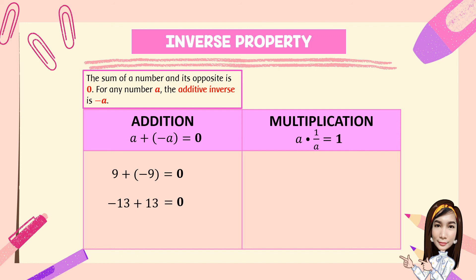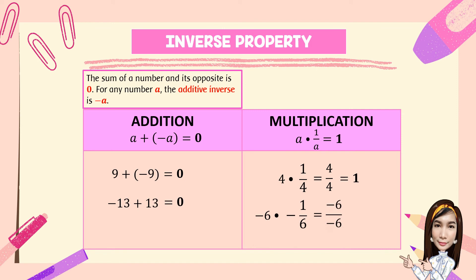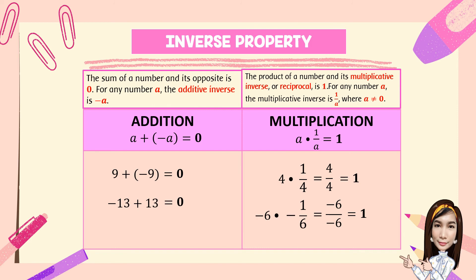For multiplication: A times 1 over A is equal to 1. For example, 4 times 1 over 4 is equal to 4 over 4, and 4 divided by 4 is equal to 1. Another example: negative 6 times negative 1 over 6 is equal to negative 6 over negative 6, so negative 6 divided by negative 6 is equal to positive 1. The product of a number and its multiplicative inverse or reciprocal is 1. For any number A, the multiplicative inverse is 1 over A, where A is not equal to 0.